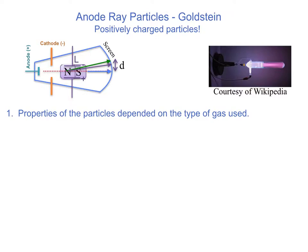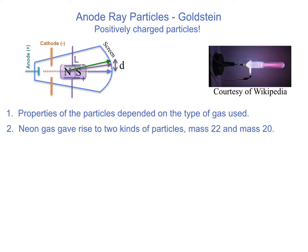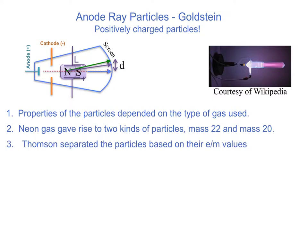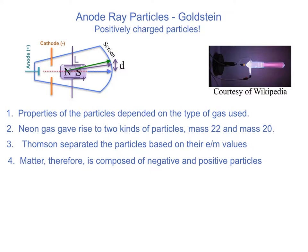The properties of these particles depended on the gas used, which was surprising to Thomson because in the cathode ray experiment the particle properties did not depend on the gas. More interesting was that with neon, he found two particles having two different masses — about 10% different in their charge-to-mass ratios — and these were later assigned masses 20 and 22. In this way Thomson discovered isotopes, and the mass spectrometer was born. He separated these particles based on their charge-to-mass values by applying electric and magnetic fields.